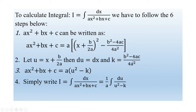We also let k = (b² - 4ac) / 4a². So finally, in step three, ah² + bh + c equals a(u² - k).